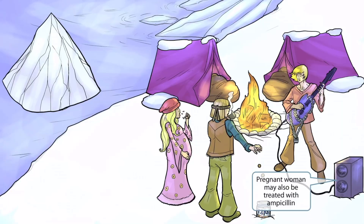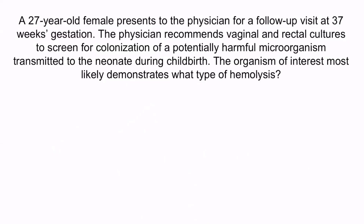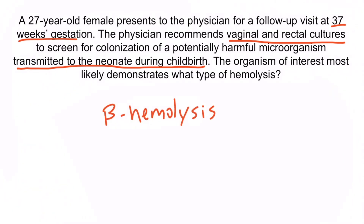Now that we've covered the image, let's do a question. A 27-year-old female presents to the physician for a follow-up visit at 37 weeks gestation. The physician recommends vaginal and rectal cultures to screen for colonization of a potentially harmful microorganism transmitted to the neonate during childbirth. The organism of interest most likely demonstrates what type of hemolysis? From the question stem, this is describing Group B Strep. Group B Strep may colonize the vagina and rectum, so vaginal and rectal cultures are typically obtained at 35 to 37 weeks gestation. If the mother is colonized, the organism can be transmitted to the neonate during childbirth. Therefore, the question stem is describing Strep agalactiae, which demonstrates beta hemolysis. The answer to the question is beta hemolysis.